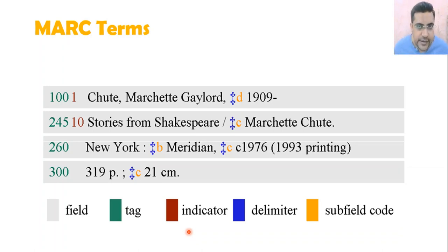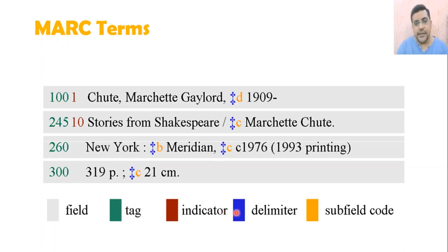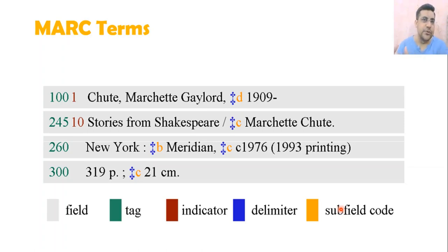In MARC cataloging, we have fields — if you see the gray lines, they are fields. We have tags, which are three-digit identifiers — you can see the green ones. Then we have indicators, delimiters, and subfield codes. These are the main structural elements of MARC, providing information to the computer in a readable format.